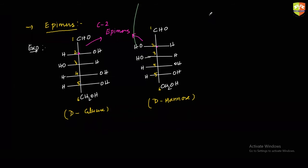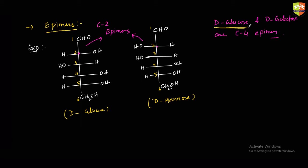One more example: D-glucose and D-galactose are C4 epimers. Both of these questions have been asked in the exam. So if you know the structure of glucose, you can draw the structure of D-galactose — at C4, the OH will be on the left and H will be on the right. You must remember: glucose and mannose are C2 epimers, and glucose and galactose are C4 epimers.